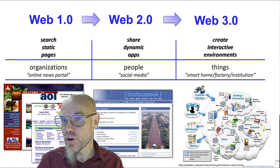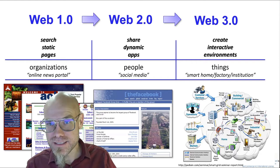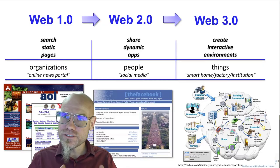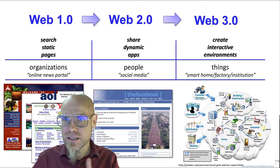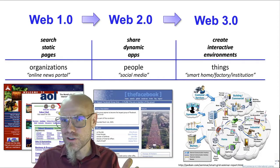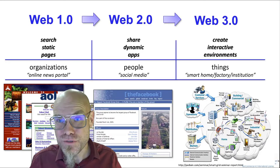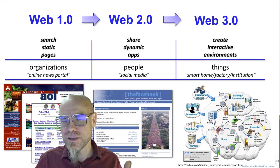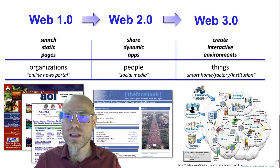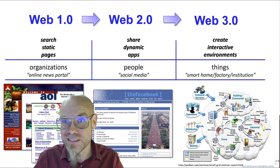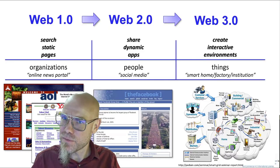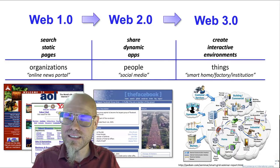In web 1.0 there are organizations, in 2.0 there are people. And 3.0? Things. These environments are full of things — artificially intelligent things that have some agency themselves. It's an internet of things where machines can talk to each other. One machine can say it needs to be charged and a second machine starts charging it. For example, you can program your self-driving car to start charging at 1am — that's already an internet of things.